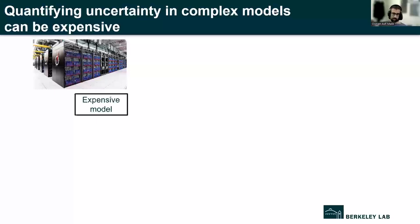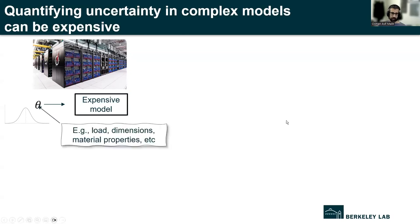The problem setup here is that we have some kind of expensive model that we're interested in. This could, for example, be a PDE model that you have to run on a supercomputer. This model has some set of inputs that we represent with a vector theta, and we assume that these inputs are random in some sense, so that there's a random distribution over the values they can take. These things could be stuff like load, dimensions, material properties, and so on.